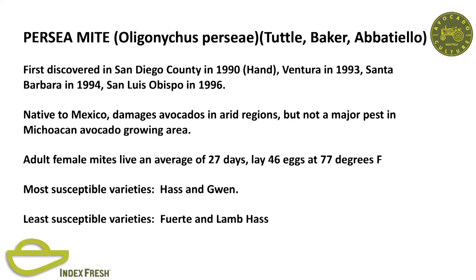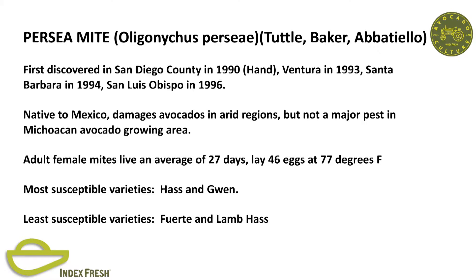Perseamite—similar situation, it came in before thrips. First discovered in San Diego County by Matt Hand, my partner. We didn't get it to Ventura until about 1993. In San Luis Obispo, Santa Maria area, we got perseamite about the same time we got avocado thrips. Native to Mexico, damages avocados in arid regions, but it's not a major pest in the large avocado growing areas. Most susceptible varieties: Hass and Gwynn.